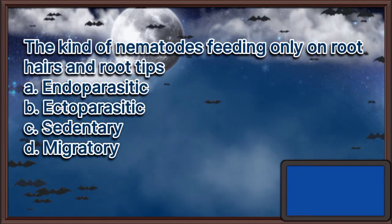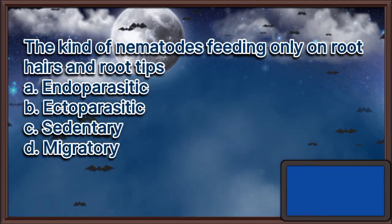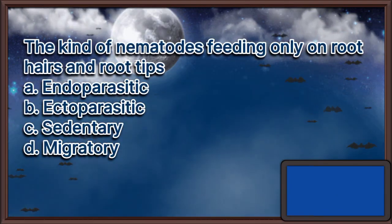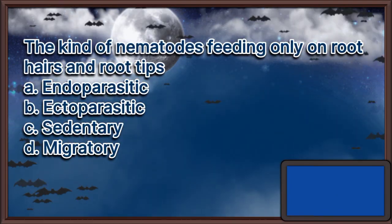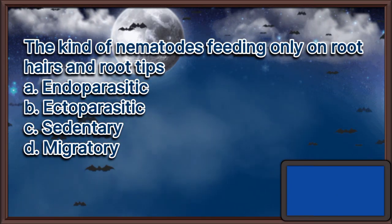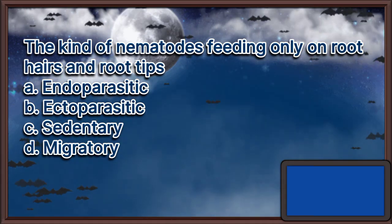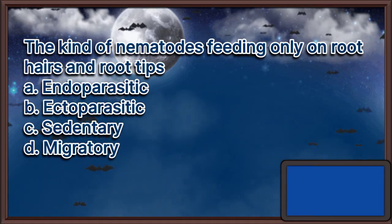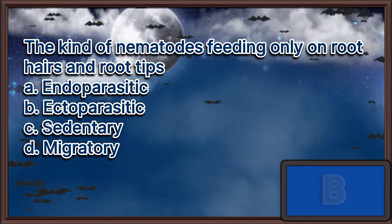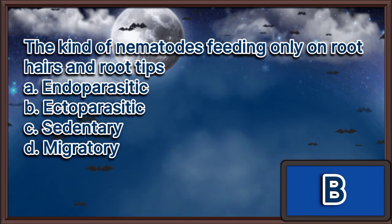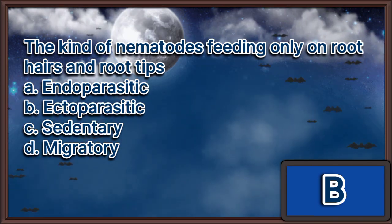The kind of nematodes feeding only on root hairs and root tips. A. Endoparasitic. B. Ectoparasitic. C. Sedentary. D. Migratory. The answer is letter B.